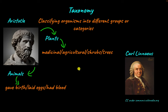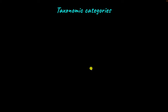Carl Linnaeus was a biologist who brought structure and organization to taxonomy. Taxonomy involves classifying organisms into different groups or categories, and each of these categories is called a taxon — the plural form is taxa. Taxonomic categories are not horizontal; instead, there is a clear taxonomic hierarchy, which means there is rank.